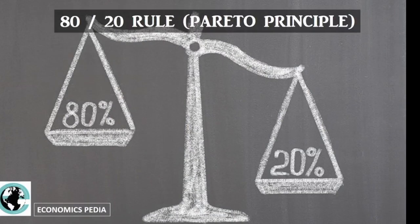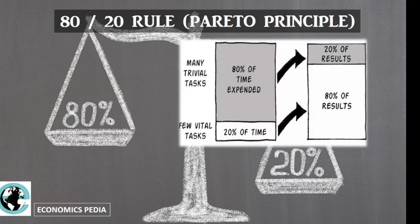The first tip is the 80-20 rule, also known as the Pareto principle. If you can complete the few most vital tasks in 20% of the total time, you can achieve 80% of the intended results. As you can see with the help of a diagram, this 20% of effort should be put in quickly and in the right direction. So the number one rule is this 80-20 rule.